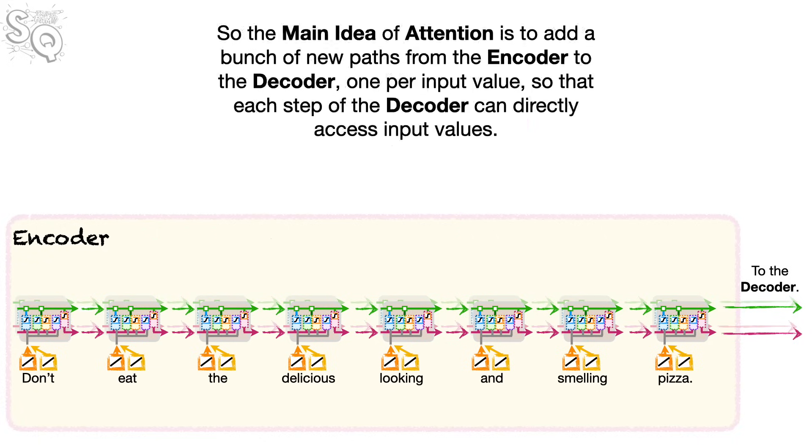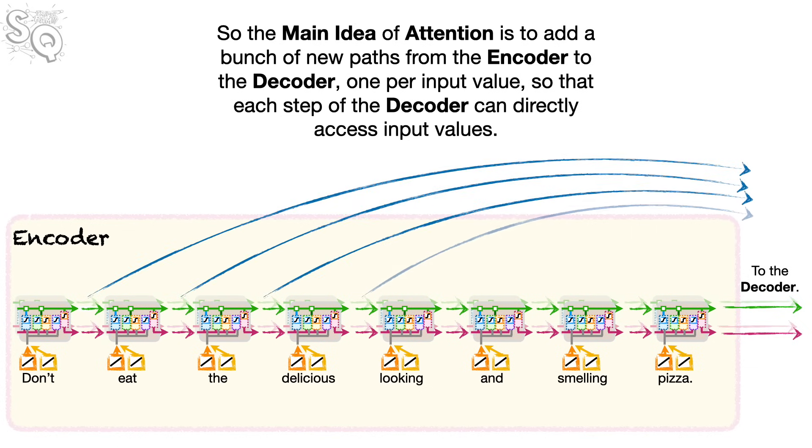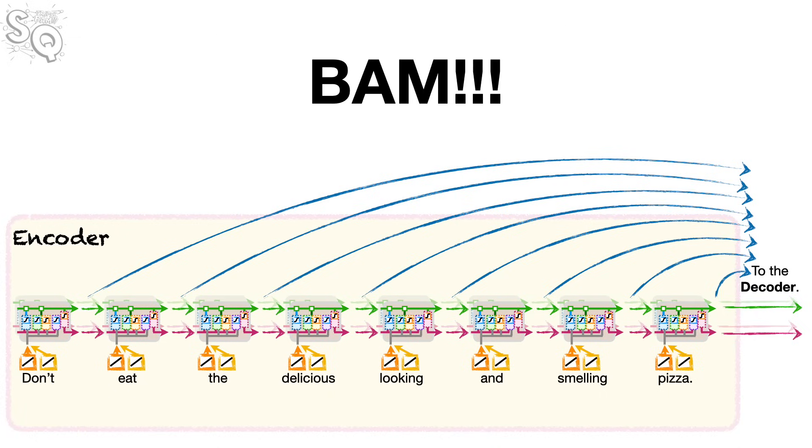So the main idea of attention is to add a bunch of new paths from the encoder to the decoder, one per input value, so that each step of the decoder can directly access input values. Bam!